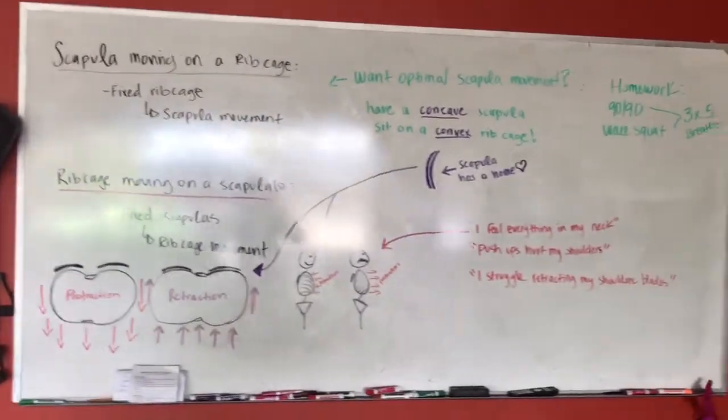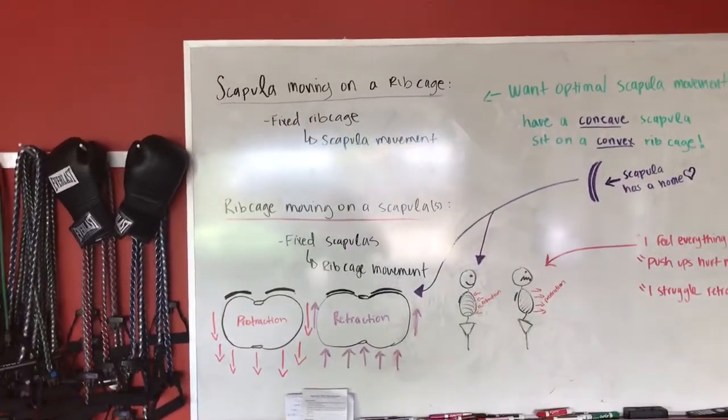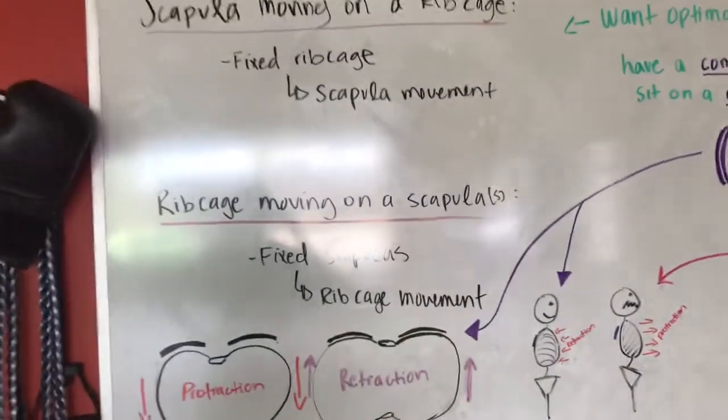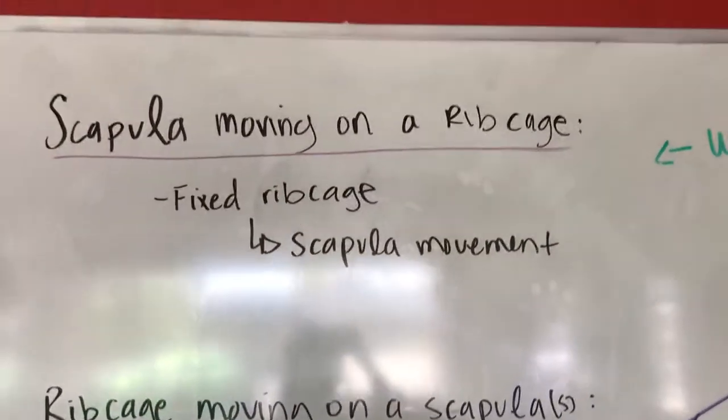So of course my phone dies right when I go over with the students what I have here on this board, so let me go over this real quick. We've got two types of motion when it comes to the relationship of the ribcage and the scapula.